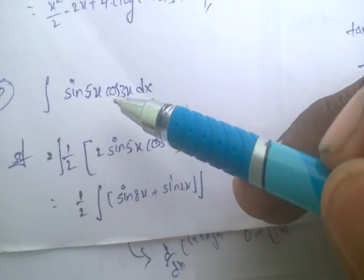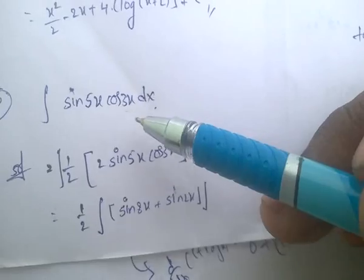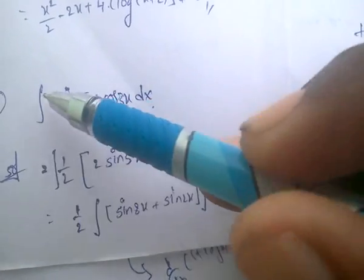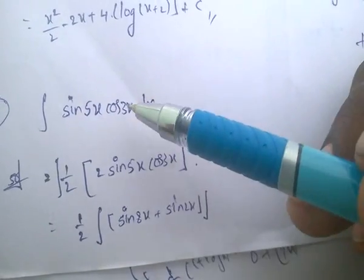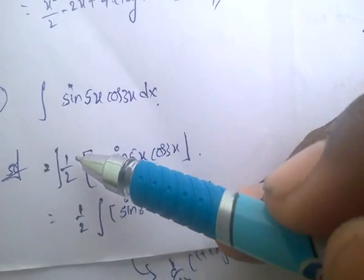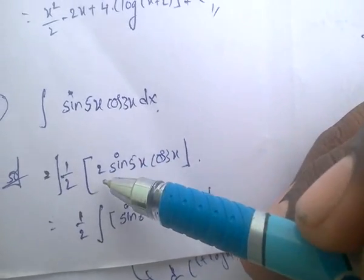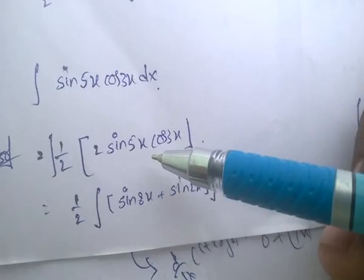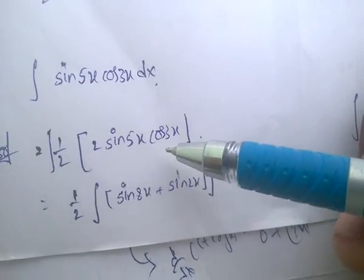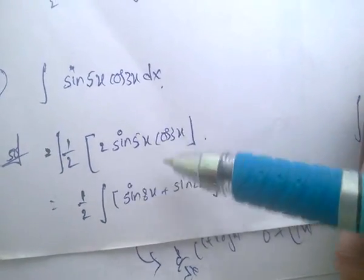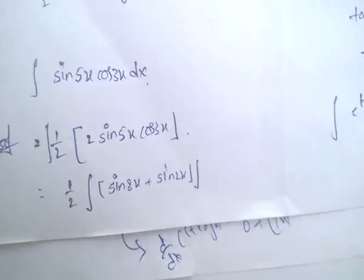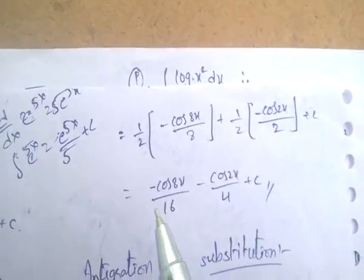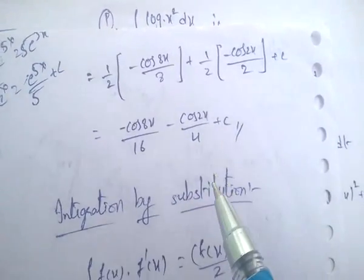Integral of sin 5x · cos 3x dx: multiply and divide by 2, then apply the formula 2 sin A cos B equals sin(A+B) plus sin(A−B). Apply the formula and then integrate to get the final answer.